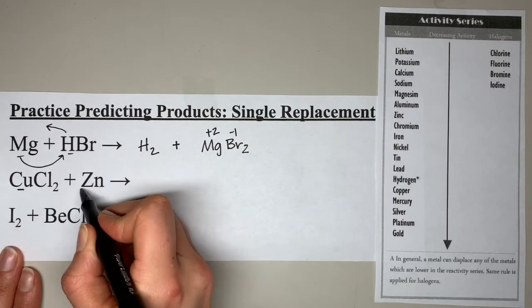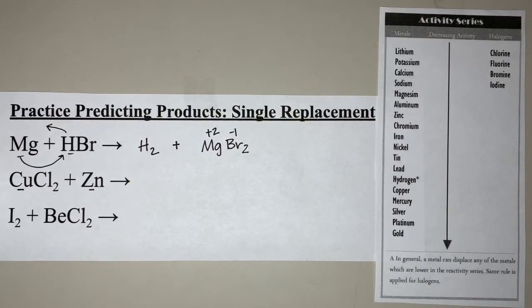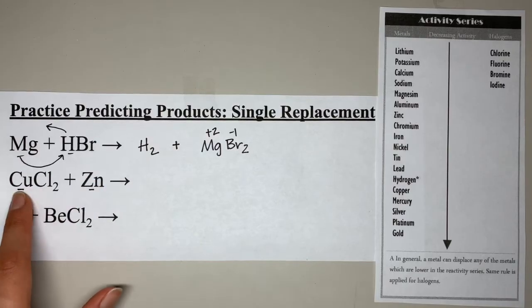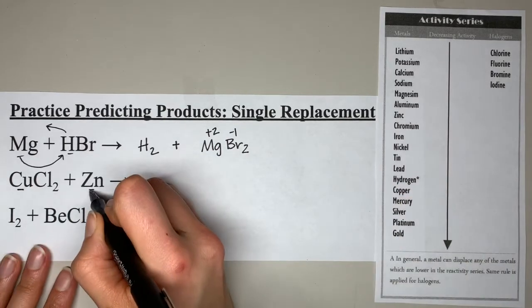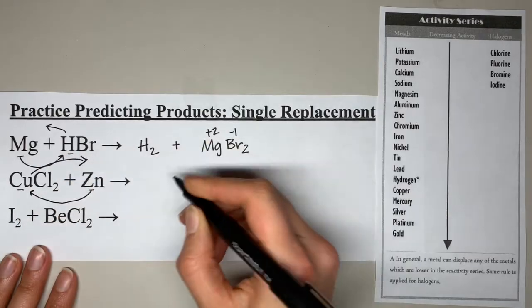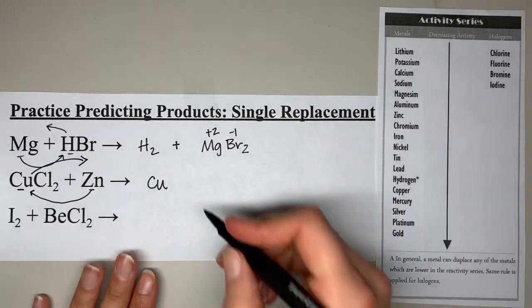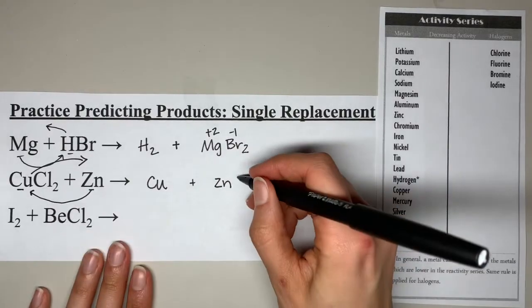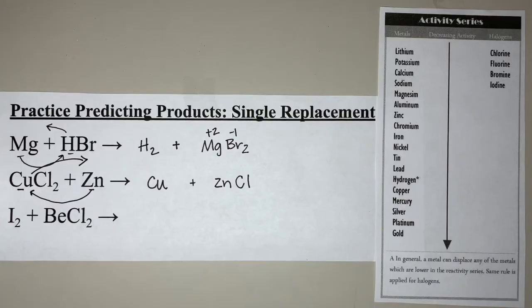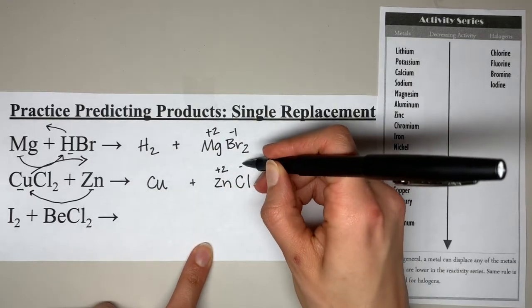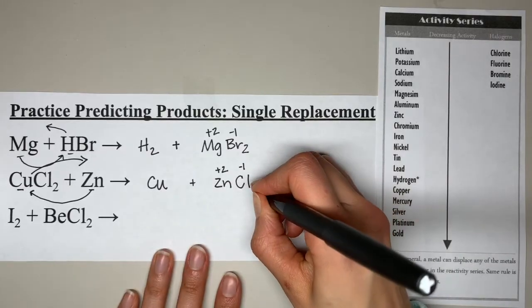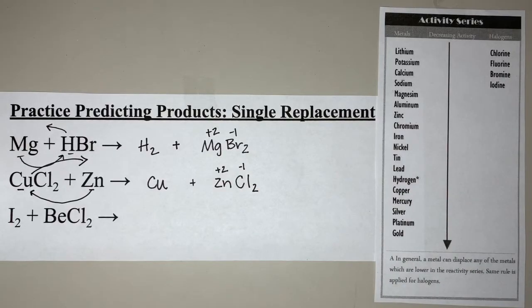For the second practice problem, there are also two metals: copper and zinc. Zinc has to be above copper in order to replace it — and it is. So zinc kicks the copper out; copper is now by itself. Zinc forms a new compound with the chlorine. Crisscrossing: zinc is +2 and chlorine is −1, so the 2 comes down as a subscript on the chlorine, giving us ZnCl₂. Copper is not a diatomic element, so it just stays as Cu.